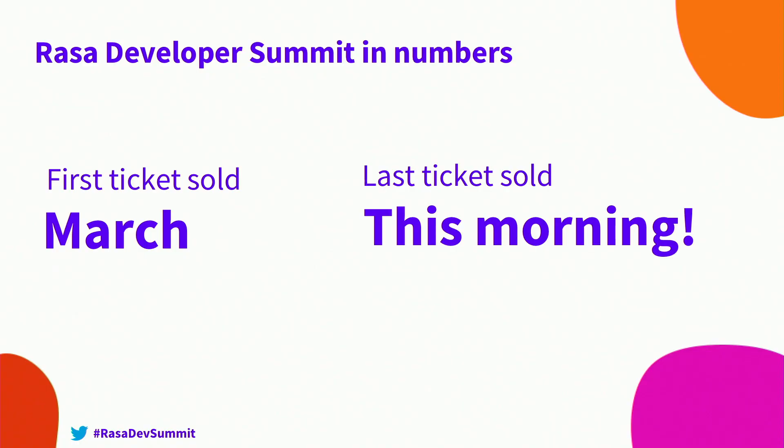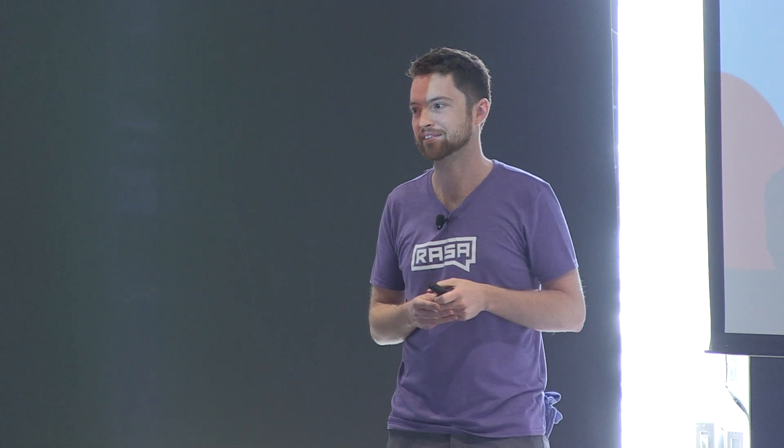We started selling tickets in March, and as these ticket sales tend to go, it was kind of slow and steady, and then all of a sudden at the end, all the mass of the distribution was right at the end — the last ticket was sold this morning. Someone snuck in right at the very last minute. The first ticket we sold in March was to Krishna. Is Krishna here? Didn't turn up.